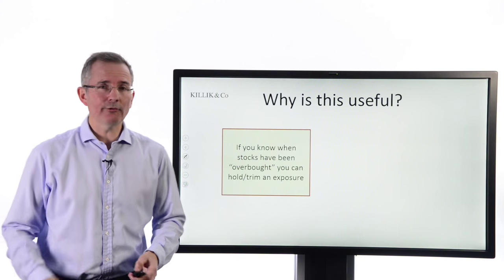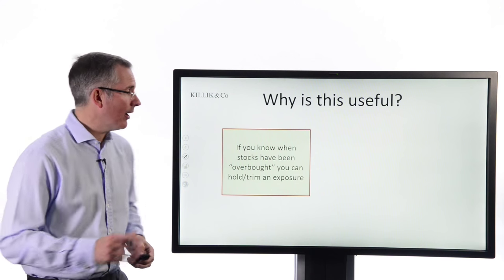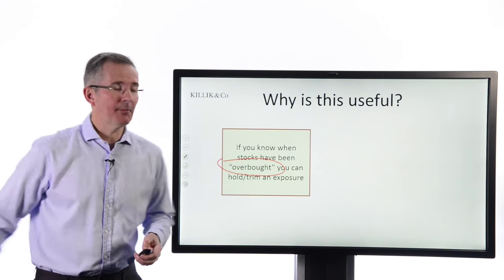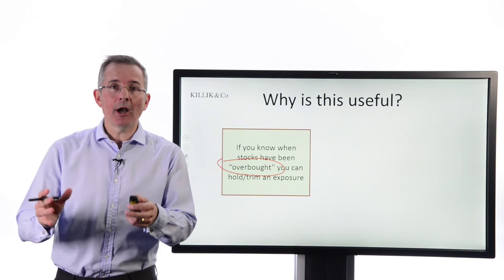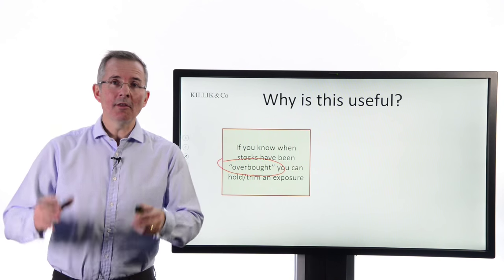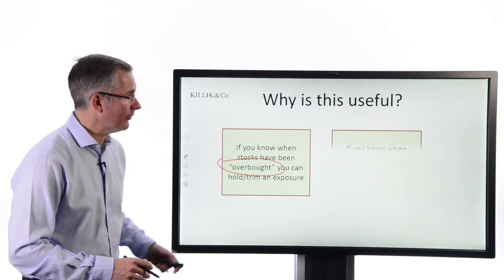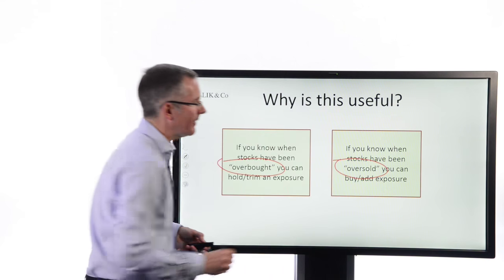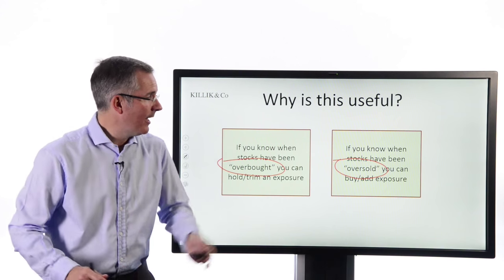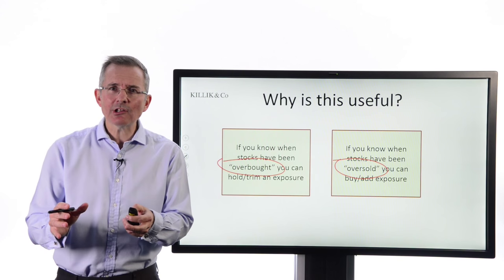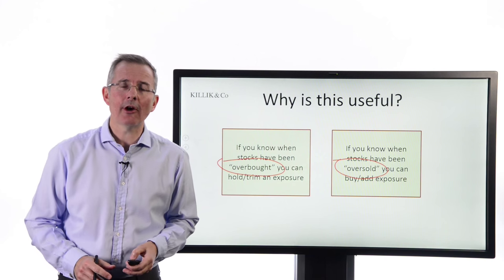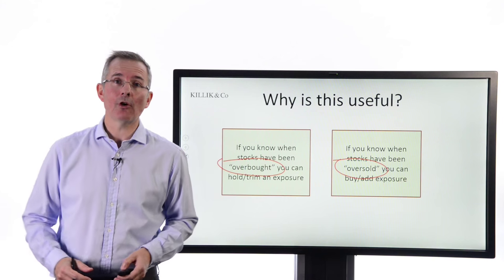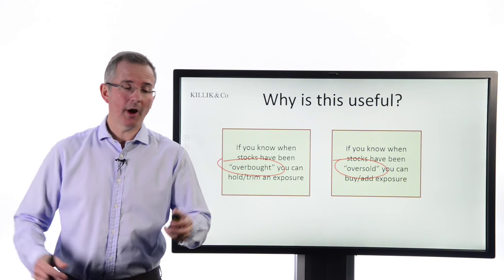Now, why is all this useful? Basically, if you could identify when stocks have been, to use the jargon, overbought, the market jargon, then you might look at holding or trimming part of your portfolio. That could be potentially a good opportunity to do that. If you can see that stocks have been oversold, if there's some sort of indicator that seems to be suggesting that, then maybe that's where you think, actually, I wouldn't mind adding to my position and now's quite a good time to do it. Or maybe now's quite a good time to actually get into this stock for the first time and add it to my portfolio.